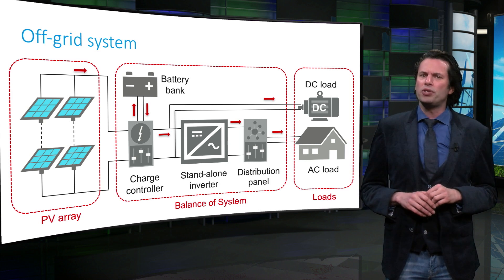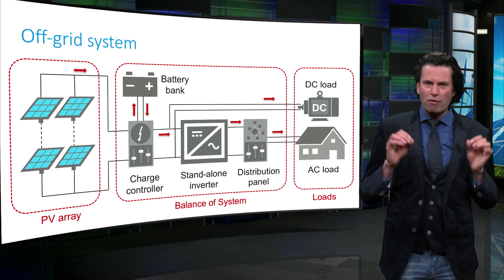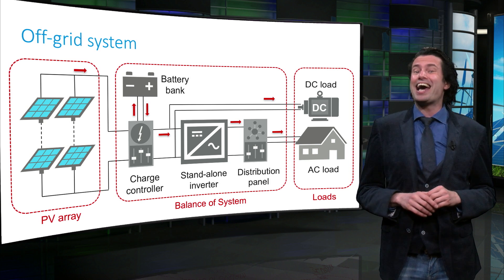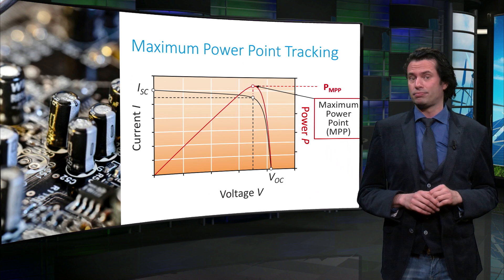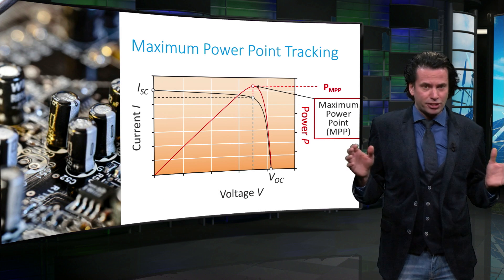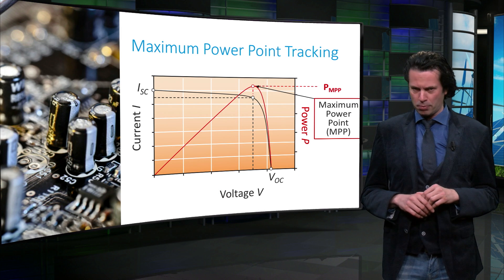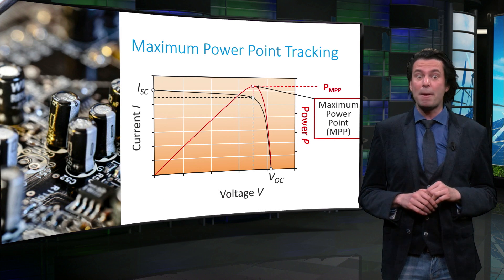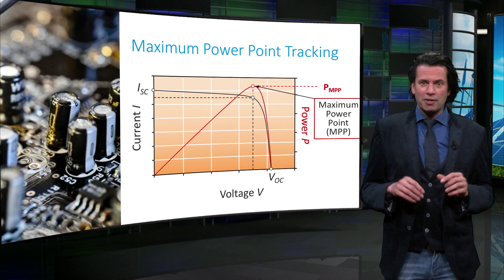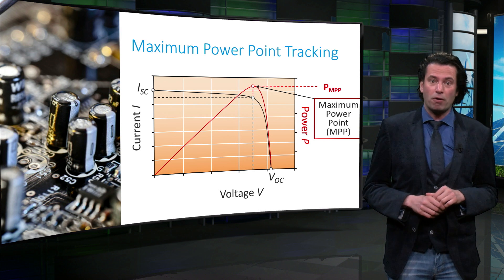Now we already know the basic application of an inverter in the PV system: power conversion from DC to AC. Can the inverter perform any additional function? The answer is yes. Thanks to advances in power electronics, it is common to have inverters that implement a maximum power point tracking (MPPT) mechanism before inverting the voltage, thus ensuring that the PV modules or arrays are operating at their maximum power point.